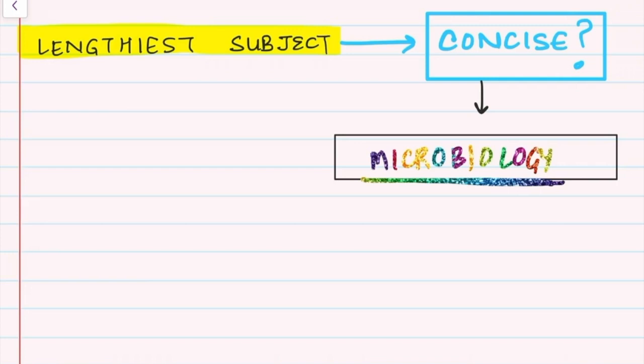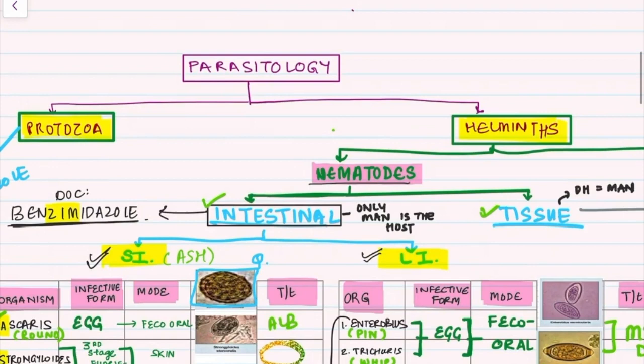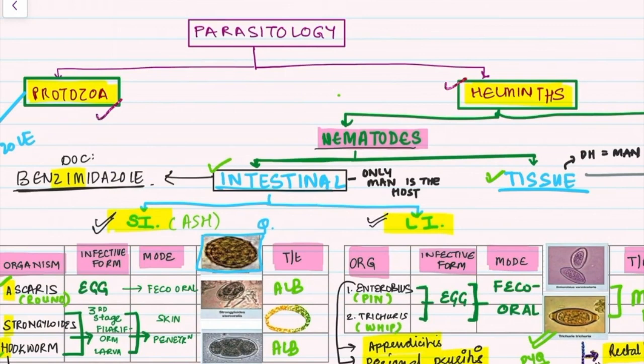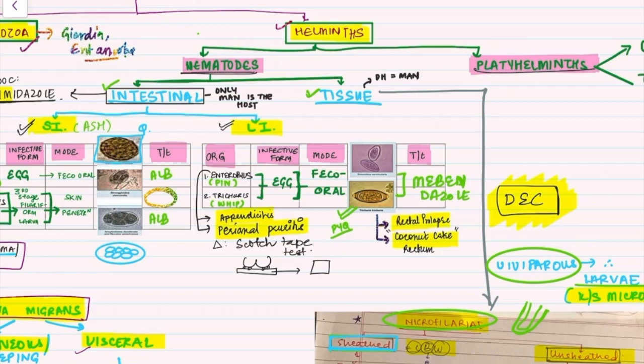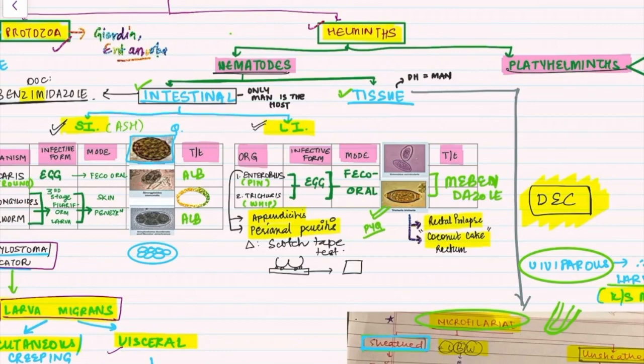For ease I have made a simple table for you. Parasites can basically be divided into two: protozoan and helminth. Under protozoan we have very common organisms like Giardia and Amoeba, which we'll deal with later. Under helminths we have a lot of confusing organisms, so helminths are divided into nematodes and platyhelminths.